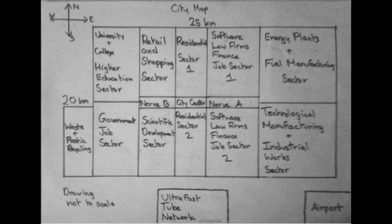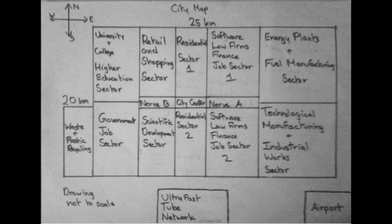This is the map. I have divided the entire city into different sectors because, in my opinion, a city works well when it is organized like a human body — each part has its own function. I want the residential sector in the middle to make sure the other sectors are quick and easy to access for residents. The most useful sectors are located nearest, such as the retail and shopping sector and the software, law, and financial job sector, as software, law, and finance are the biggest job industries today.